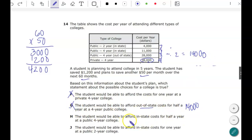The student would be able to afford in-state costs for half a year at a public four-year college. So $11,000 divided by two, so it's going to be $5,500. The student does not have enough. The student will be able to afford in-state costs for one year at a public school. Yes, that is true.